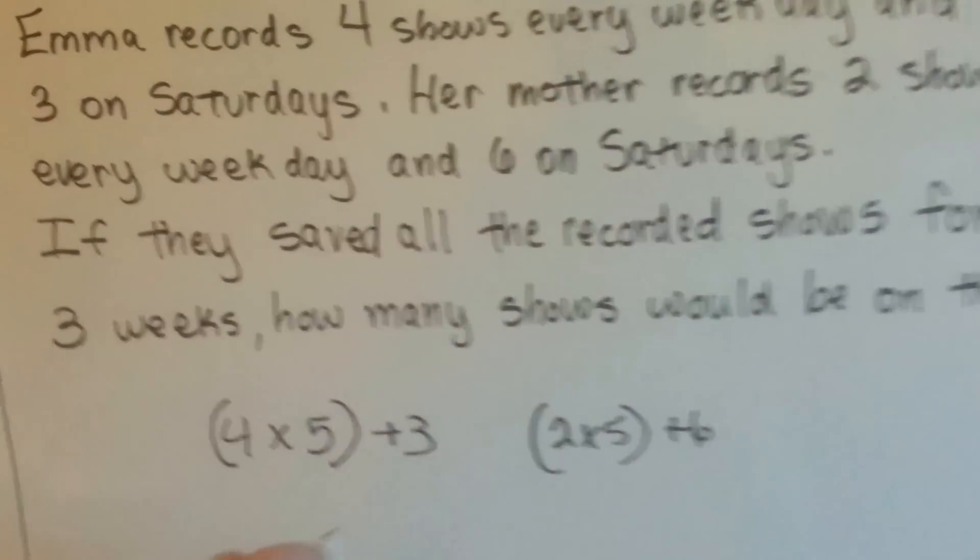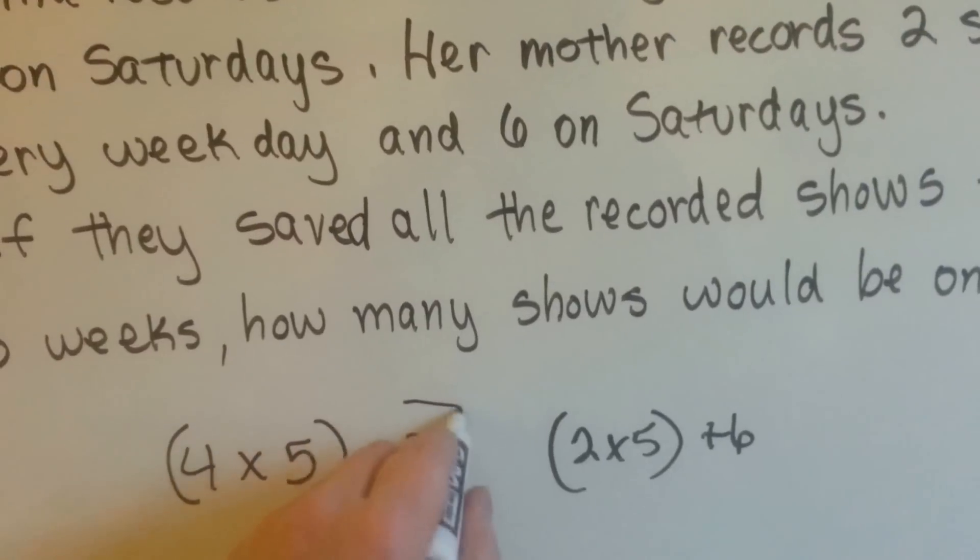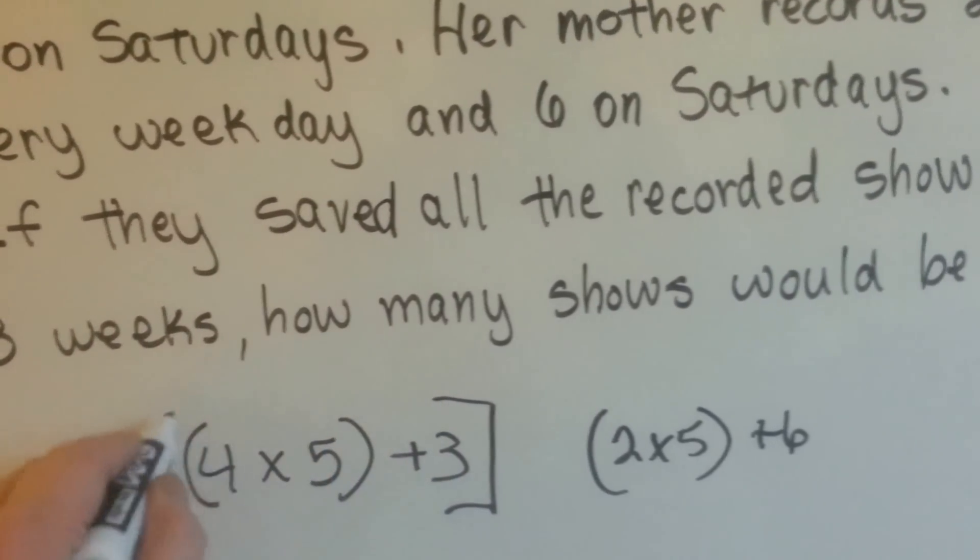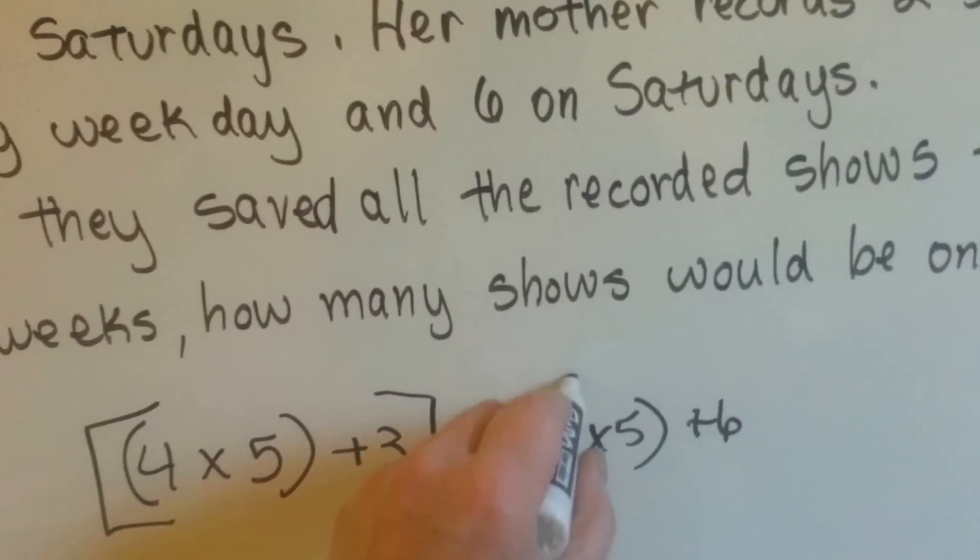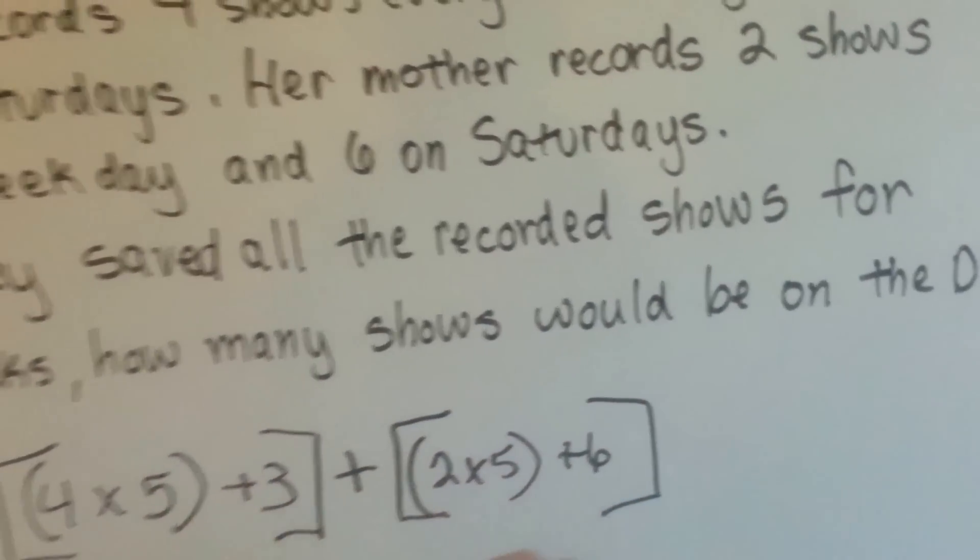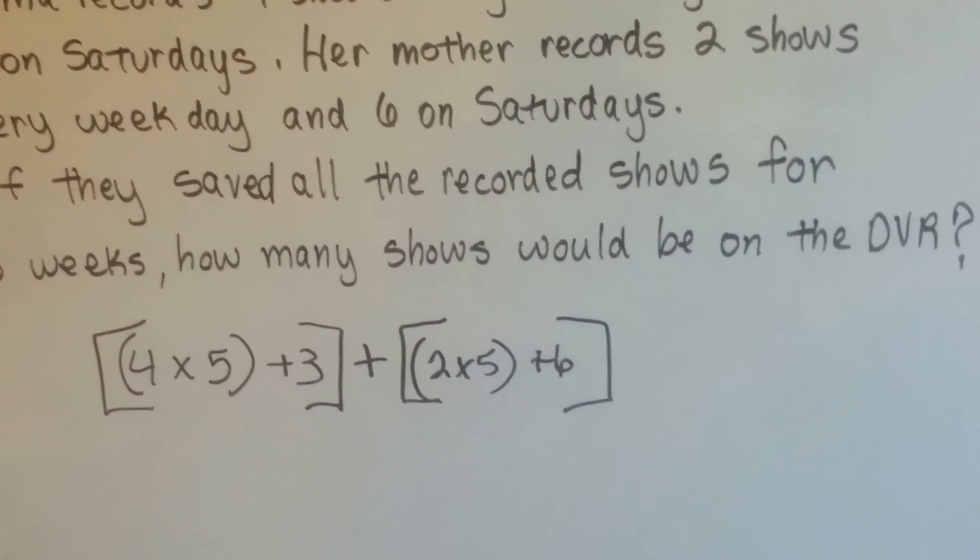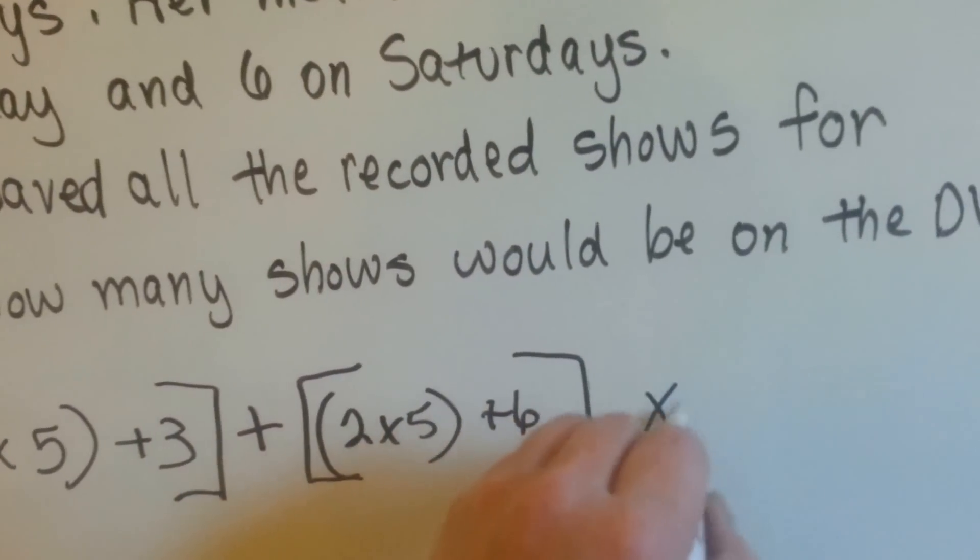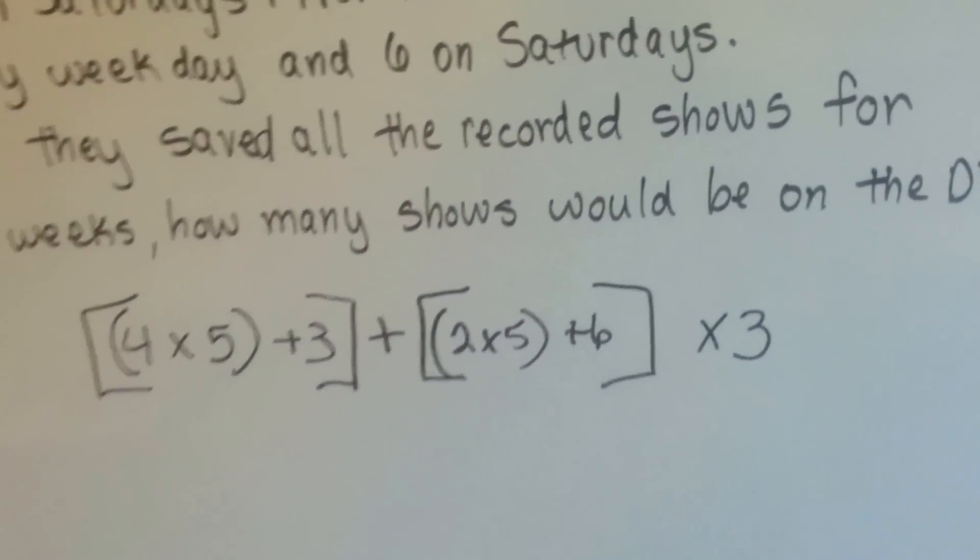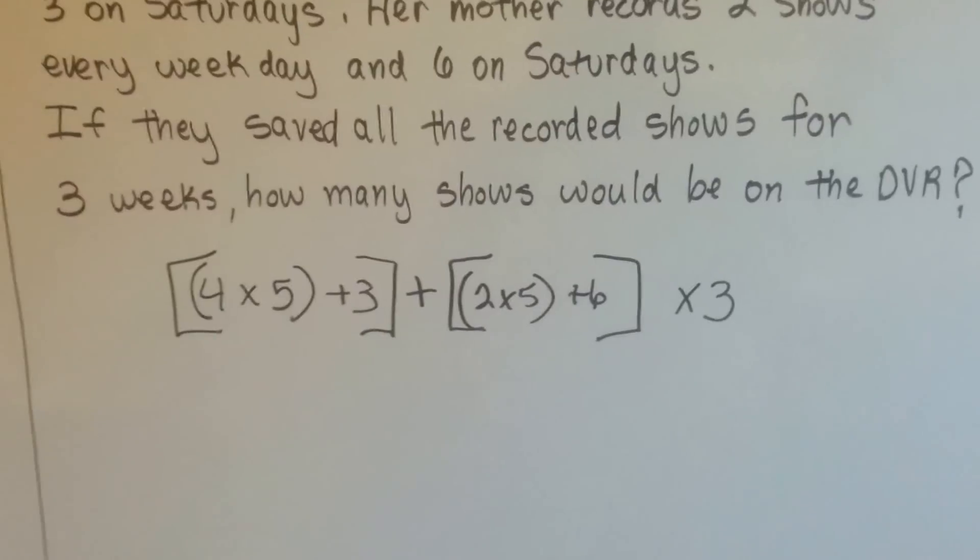Now, it says how many shows would be on the DVR, that tells me we need to add these all up. So we need to add this and this together. So we've got to put this in brackets so we don't confuse it with her mother. They've got to be added. And we need to find out for 3 weeks, so all of this needs to be multiplied times 3. So now we can answer it because we've got it all written.